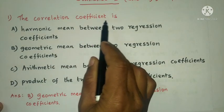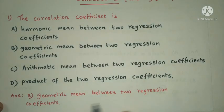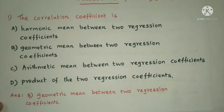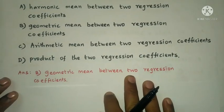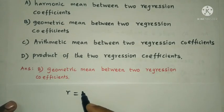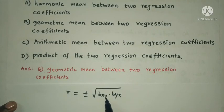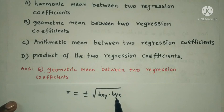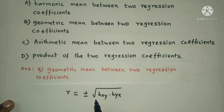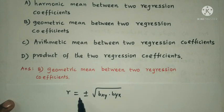The correlation coefficient is the geometric mean between two regression coefficients. Correlation coefficient r equals plus or minus square root of Bxy into Byx, where Bxy is the regression coefficient of x on y, and Byx is the regression coefficient of y on x. So r equals plus or minus root of Bxy into Byx.